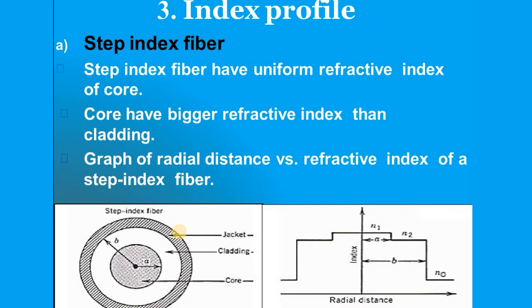An optical fiber has a cylindrical core surrounded by cladding with radius b, also cylindrical. Surrounding this there is a jacket. A cable can have one or many optical fibers, all surrounded by the jacket or sheath. Step index fiber has a uniform refractive index throughout the core.